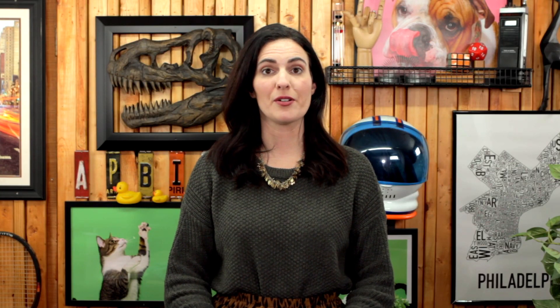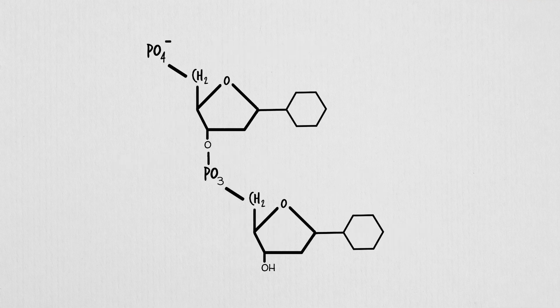And lastly, nucleic acids, which form from nucleotide monomers. A nucleotide has three parts covalently bonded together: a pentose sugar, a phosphate group, and a nitrogenous base. Alternating sugars and phosphates covalently bonded together form the backbone of nucleic acids, while the nitrogenous bases vary to determine the genetic code.